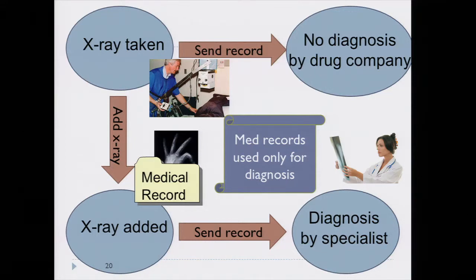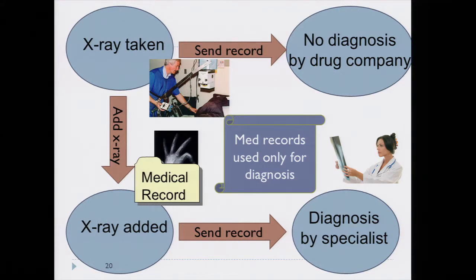Consider a simple healthcare example where an X-ray is taken and the technician has a choice: either ship out that record to a drug company for profit, or add the X-ray to the medical record and send it to a specialist for diagnosis. This interaction is governed by the policy that medical records are to be used only for diagnosis. We expect that if the record is sent to the drug company for marketing, that action is not for the purpose of diagnosis. On the other hand, if the technician adds the X-ray to the medical record and sends it to a specialist for diagnosis, we expect those actions are for the purpose of diagnosis.